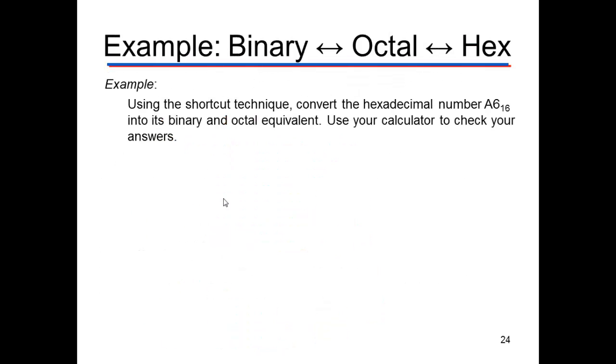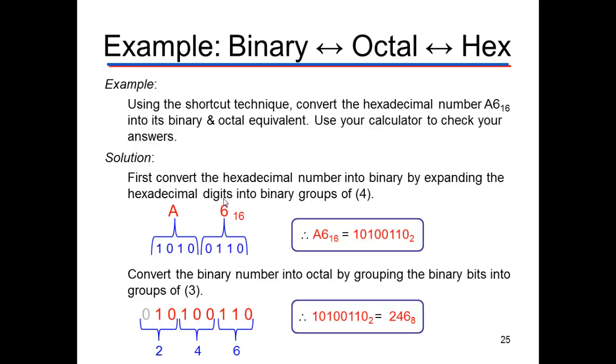So let's use the shortcut if we do A6 in base 16. So if we write it in binary, A is 10, and we write that. Then we write the number 6, and we write them all together, dropping none of the zeros, and we get the binary number 1, 0, 1, 0, 0, 1, 1, 0.